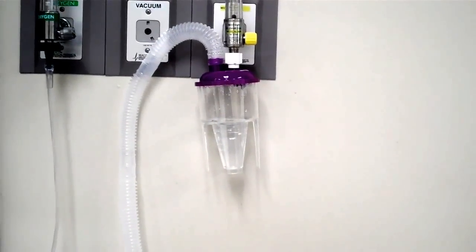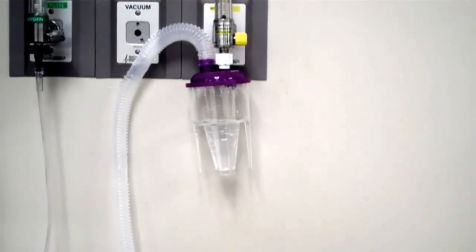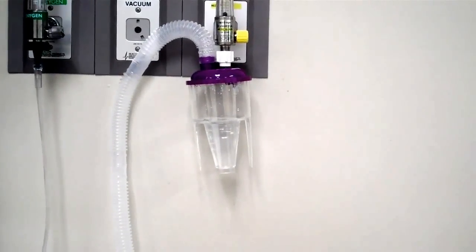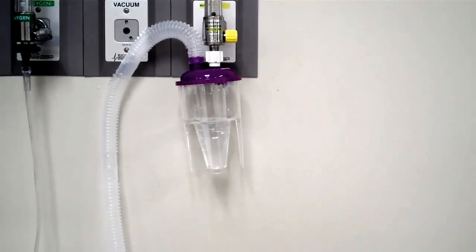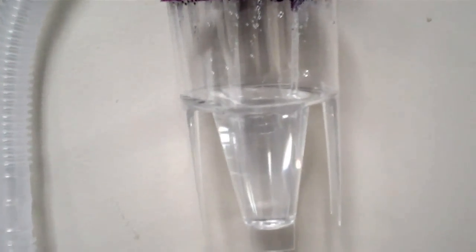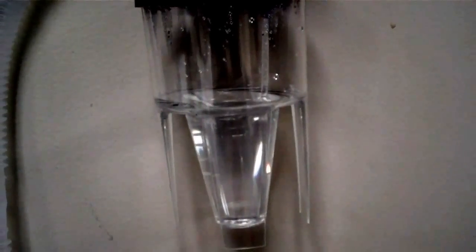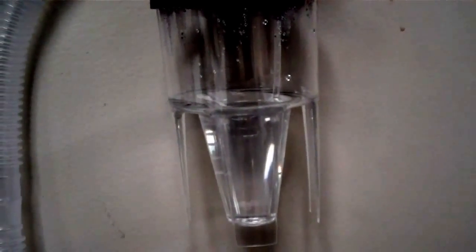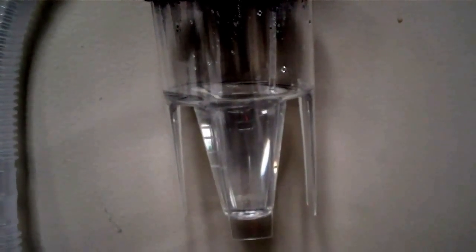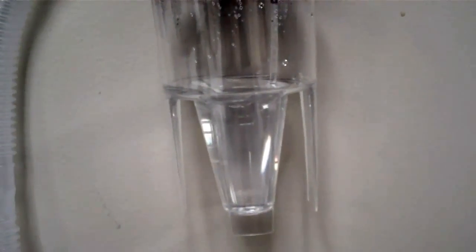We've seen the small volume nebulizer, then we saw the breath actuated nebulizer. Now you're looking at the large heart nebulizer. If you look closely you'll notice that this has the ability of containing a large volume of liquid. This is going to be your normal saline for inhalation and also your bronchodilator.